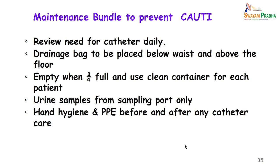The maintenance bundle to prevent CAUTI includes: daily review of whether the catheter still needs to remain inserted; the drainage bag placed below the waist and above the floor, not resting on the floor; the bag emptied when three-quarters full using a clean container for each patient separately. Urine samples should be collected only from the sampling port, and if the sampling port is unavailable, the area should be cleaned properly with spirit before collecting.